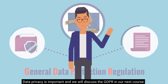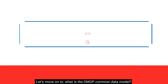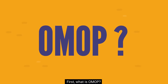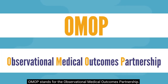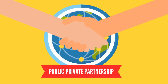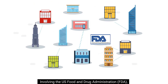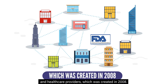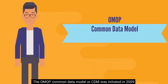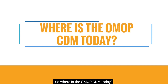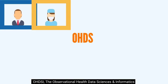Data privacy is important and we will discuss the GDPR in our next course. Let's move on to what is the OMOP common data model. First, what is OMOP? OMOP stands for the Observational Medical Outcomes Partnership. It is a public-private partnership involving the U.S. Food and Drug Administration or FDA, multiple pharmaceutical companies, and healthcare providers, which was created in 2008. The OMOP common data model, or CDM, was initiated in 2009.